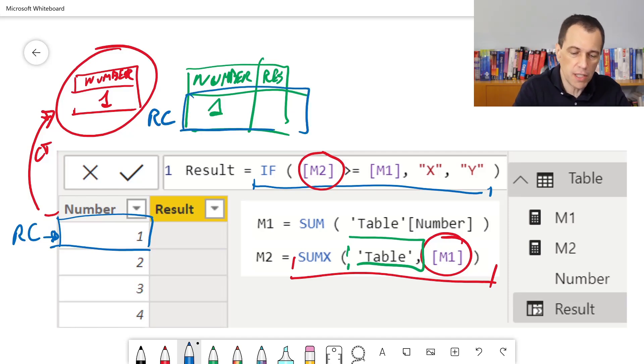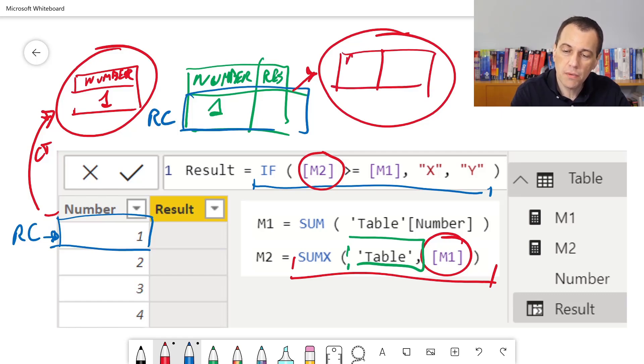And the context transition at this point has to transform this row context into a new filter context that has one row and two columns.